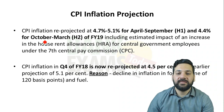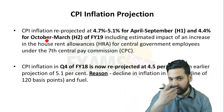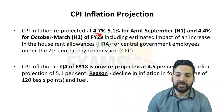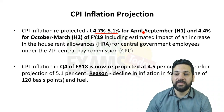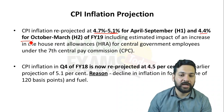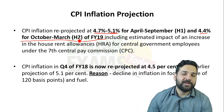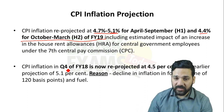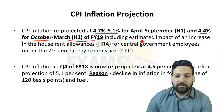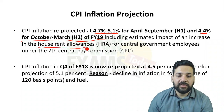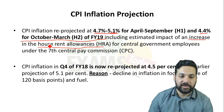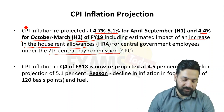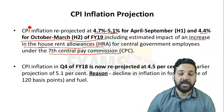Regarding Consumer Price Index inflation projections, the RBI projected CPI inflation at 4.7% to 5.1% for April to September, and 4.4% for October to March 2019. The reason for this increase is the impact of the change in the HRA policy — specifically, the increase in HRA under the 7th Central Pay Commission — which had an impact on inflation.